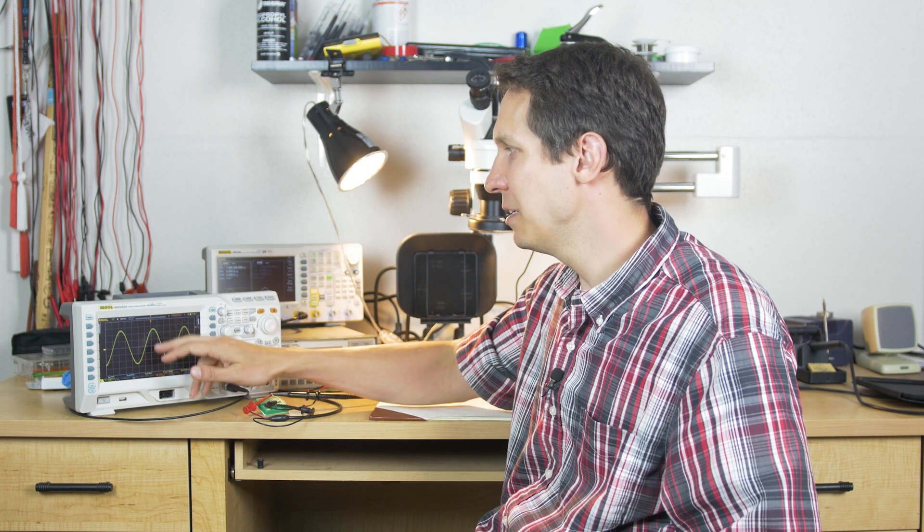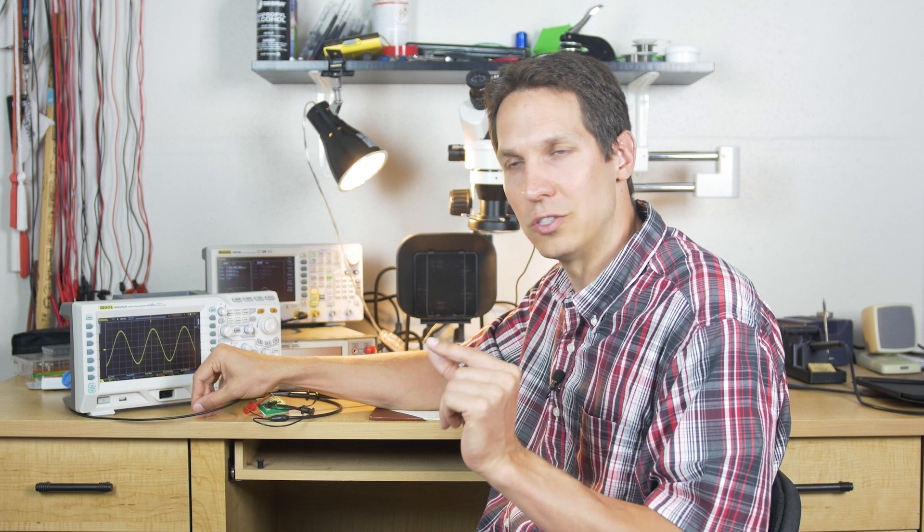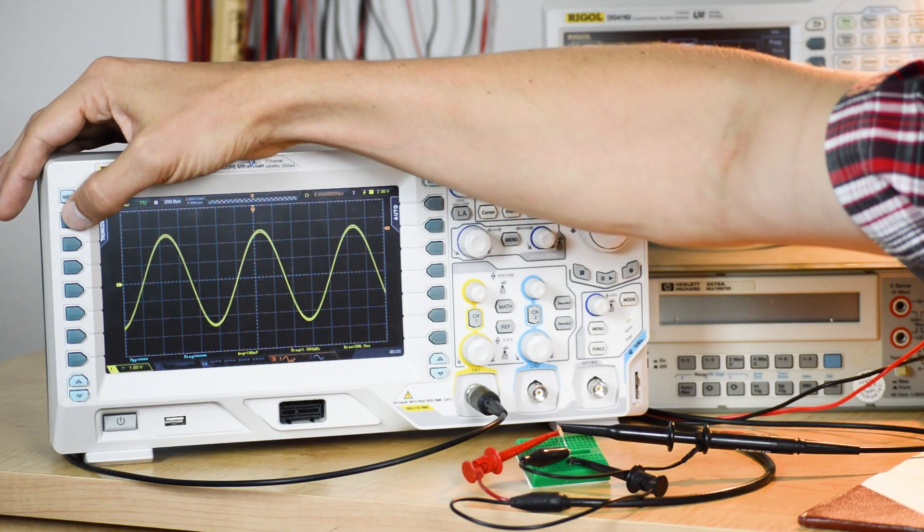One final thing. You already know how to find a signal—you can zoom in and out vertically and horizontally. But it's not very helpful if you're just counting divisions. Sometimes you want more precision. Almost every oscilloscope will have this measurement feature, but it will be different depending on how expensive it is.